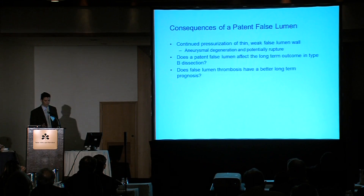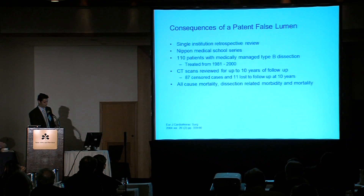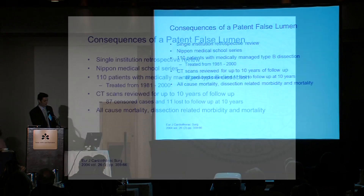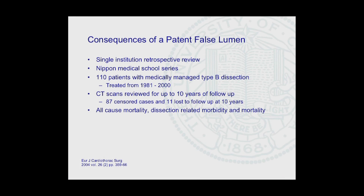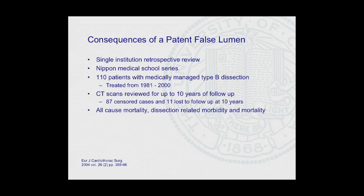This link really comes back to two single-institution series out of Japan. The first spanned approximately 20 years and was a retrospective review of 110 patients treated with medical management for chronic type B dissection. They tried to look at very detailed 10-year long-term follow-up and amazingly lost only 11 patients to follow-up in 10 years. They used a composite endpoint of all-cause mortality, dissection-related morbidity, and mortality.